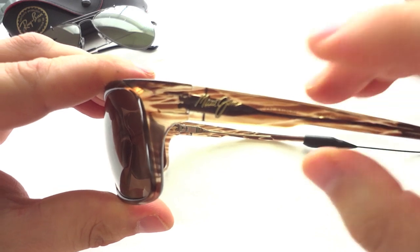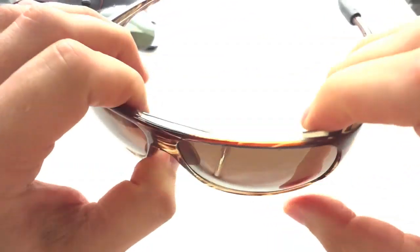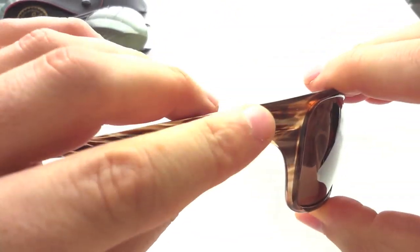Got the Maui Jim on the side. This is the amber color, and this frame is available in white, black, and this color right here. Polarized, overall super nice quality.